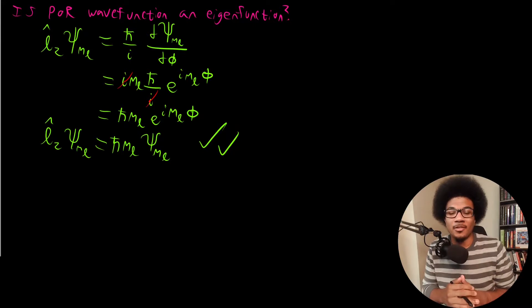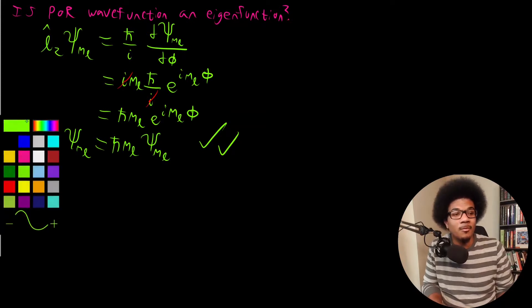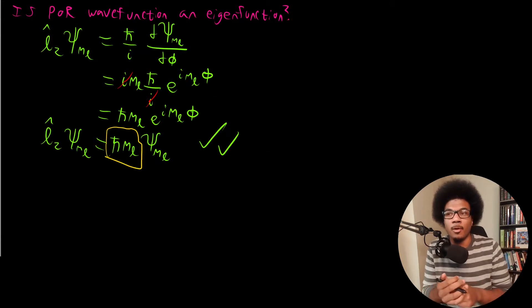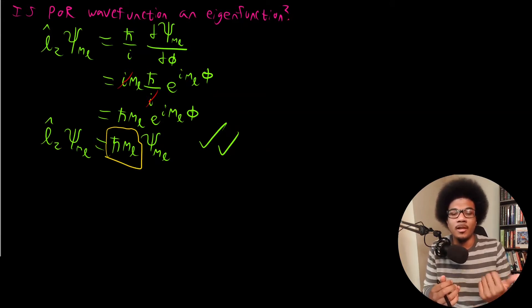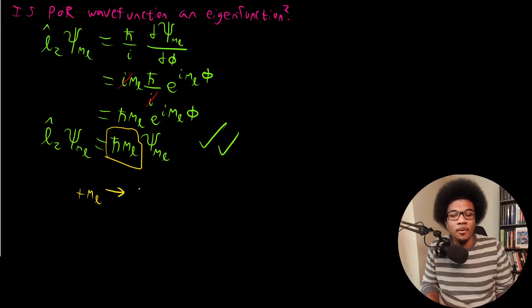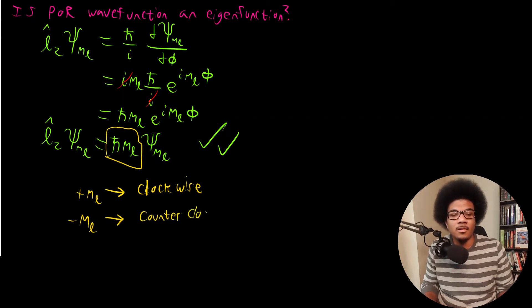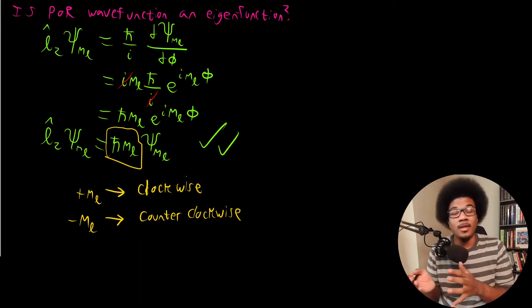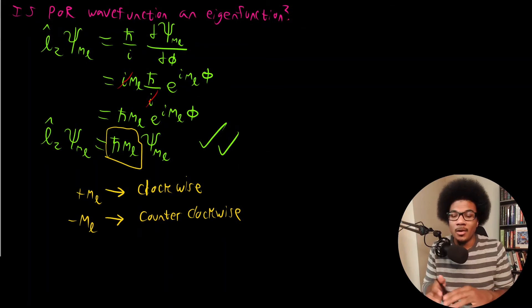So that checks out — the particle-in-the-ring wave function is an eigenfunction of the angular momentum operator. Just like with linear momentum, we get this term out front that we can interpret very similarly. Remember for linear momentum, the eigenvalue told us whether the particle was going left or right. So a positive m_L can be interpreted as clockwise rotation, while a negative m_L can be interpreted as counterclockwise rotation. Just like with linear momentum, the particle travels with the same magnitude of momentum but in changing directions — here it's going either clockwise or counterclockwise.